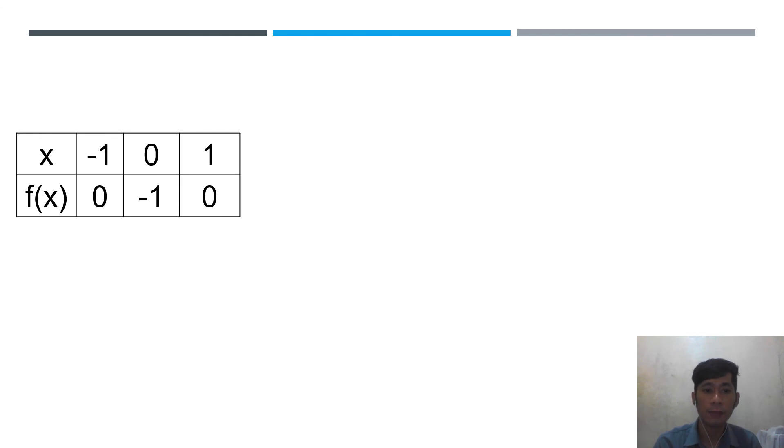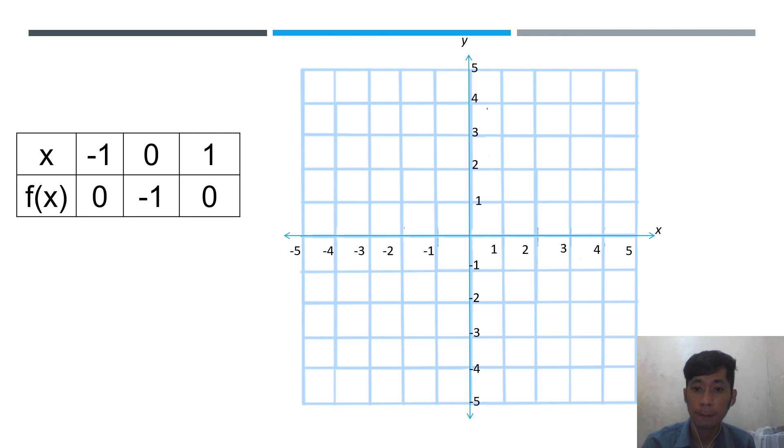So, to graph, the table of values na nakuha natin, first, we have the graphing paper. So, let's plot first, x is negative 1, y is 0, or (-1, 0). Yan po yung plot natin. Next is 0, ang x natin, y is negative 1, or (0, -1). Yan po yung plot natin. Then, x is 1, y is 0, or (1, 0) is yan po yung plot ng points nyan.